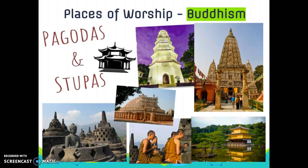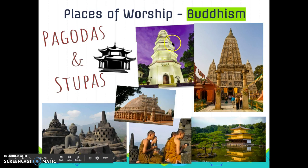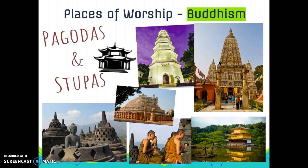Now let's talk about places of worship that are more individualized, starting with Buddhism. In Buddhism, you'll see two structures considered places of worship: one is called a pagoda, and the other is called a stupa. Pagodas are tall, have many sides, and look like towers. They are arranged in a series of tiers and balconies with slanting roofs. This is a place for individual prayer and meditation in Buddhism, although the majority of that occurs in people's homes.